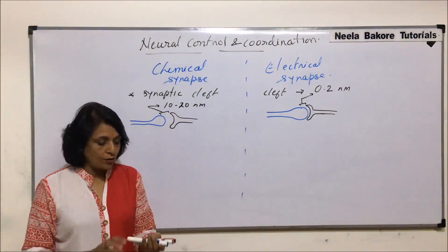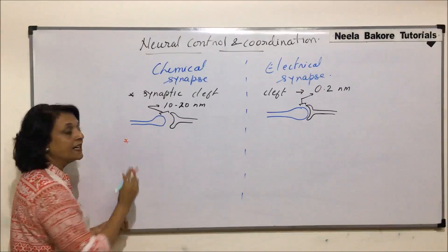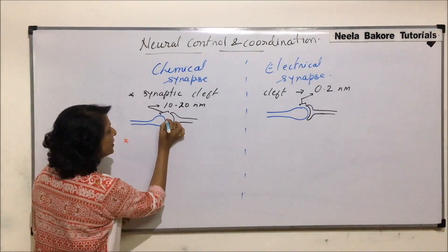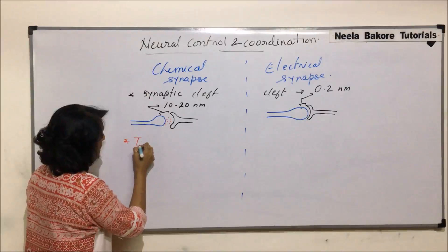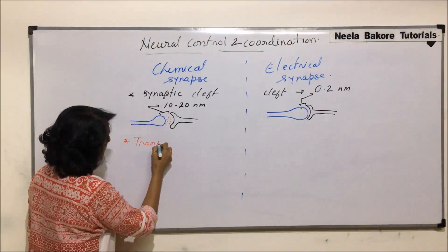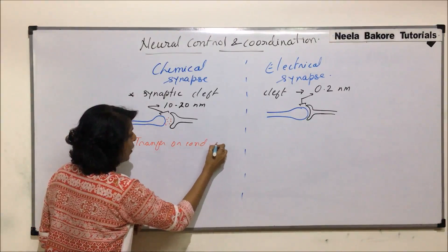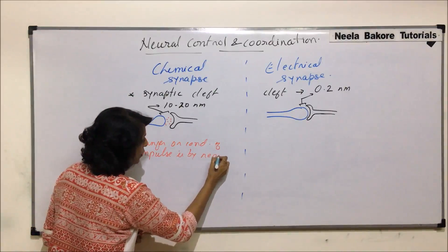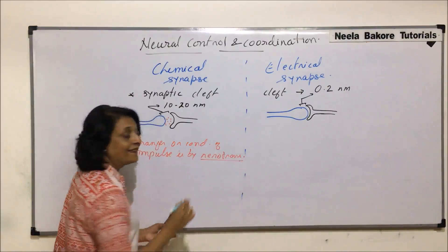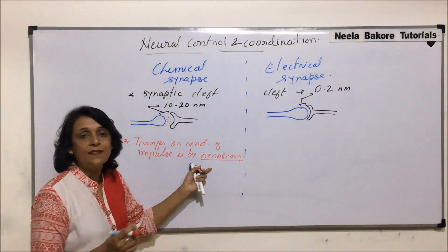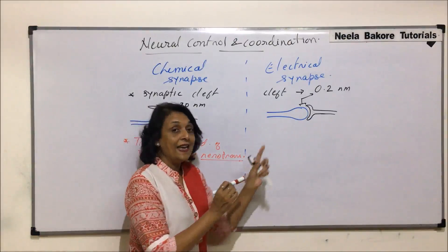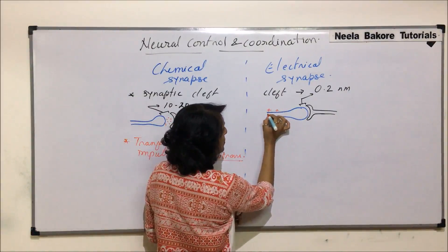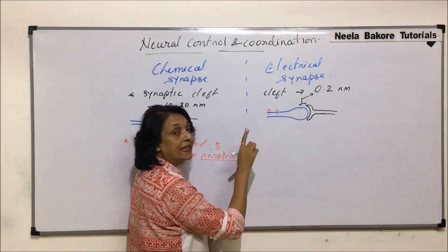Because of this difference in gap, the conduction also takes place in a different manner. In chemical synapse, because the gap is more, neurotransmitters are released, so the transfer or conduction of impulse is by neurotransmitters. That is why, since neurotransmitters are chemicals, we call it a chemical synapse.